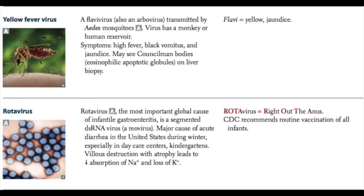The rotavirus is the most important global cause of infantile gastroenteritis. It's a segmented, double-stranded RNA virus — one of those reoviruses. It's the major cause of acute diarrhea in the United States during the winter, especially in daycare centers and kindergartens. It causes villus destruction in the gastrointestinal epithelium with atrophy that leads to decreased absorption of sodium and thereby decreased absorption of water, hence diarrhea. Remember: rotavirus — rota — right out the anus.